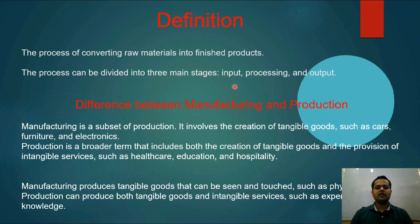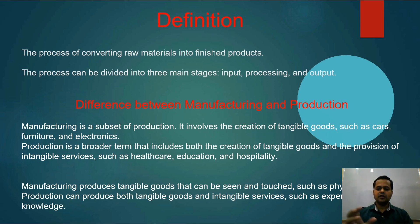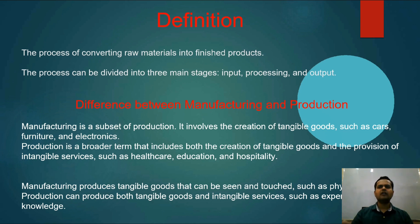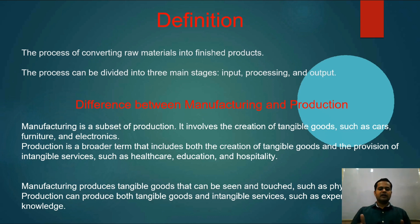Generally manufacturing and production are considered the same thing, but there is a difference. Manufacturing is a subset of production. In manufacturing, it involves the creation of tangible goods — it means goods which we can touch. Products like cars and furniture — anything we can touch — that is manufacturing.